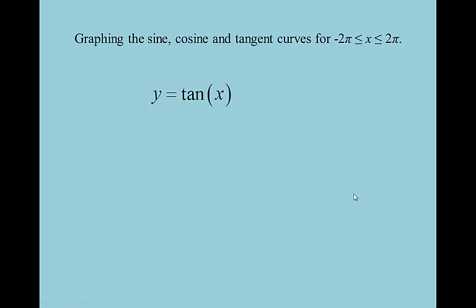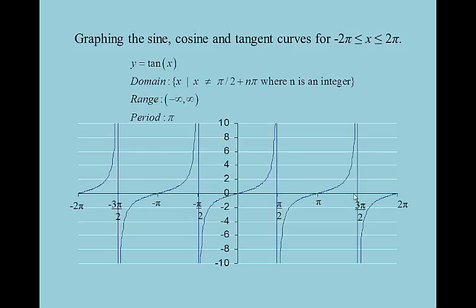Next up is y = tangent x, and this is the odd man out of these three — you can see it's very odd. We have vertical asymptotes at negative 3π/2, negative π/2, π/2, and 3π/2. What we're talking about with vertical asymptotes is that we're having a division-by-zero error. If you try taking the tangent of π/2 — tangent being sine over cosine — you're taking 1 divided by 0, and we can't divide by 0.